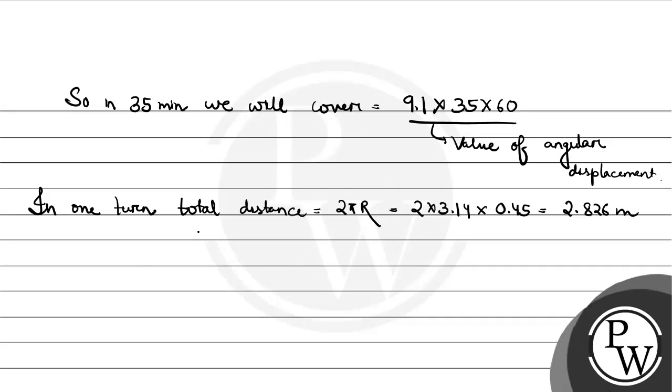In one turn we cover this distance, so our angular displacement is enough. Angular displacement in one turn is 2π, so 2π into n, where n is number of rotations, equals 9.1 into 35 into 60.